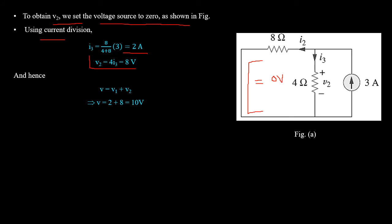As step 4, we sum up all contributions of the independent sources. The voltage V across the 4 ohm resistor equals V1 plus V2, which gives a value of 10 volts.